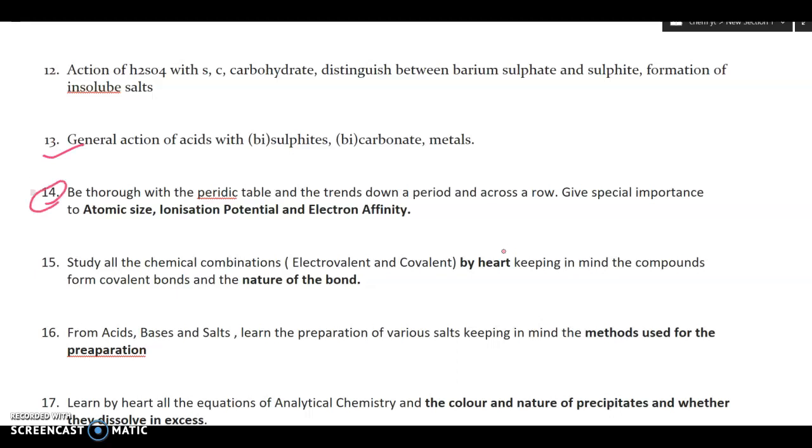Now a question that is definitely asked from the periodic table which is about atomic size, ionization potential, electron affinity, electronegativity. They may ask you to arrange the elements in increasing order of ionization potential or decreasing order of electron affinity.